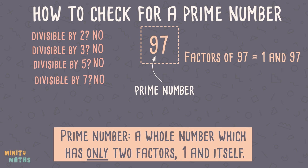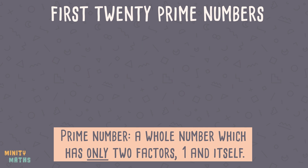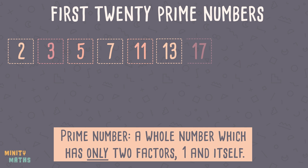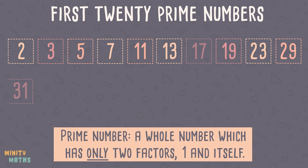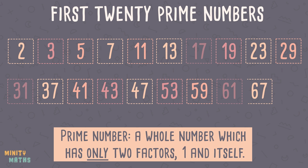Notice that the numbers we have checked are all prime numbers. Have a look at these prime numbers — these are the first 20 primes. Do you notice anything? The prime numbers greater than 5 all end in 1, 3, 7 or 9. This is true for all prime numbers greater than 5.